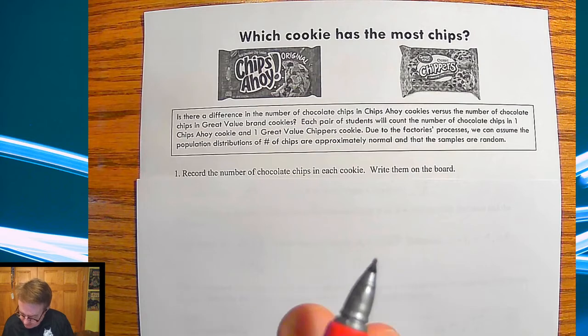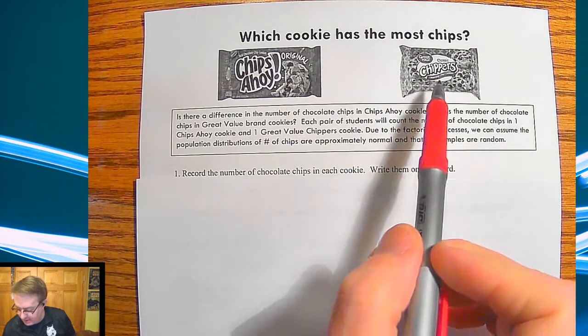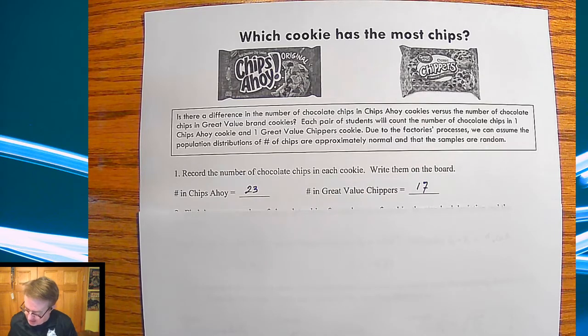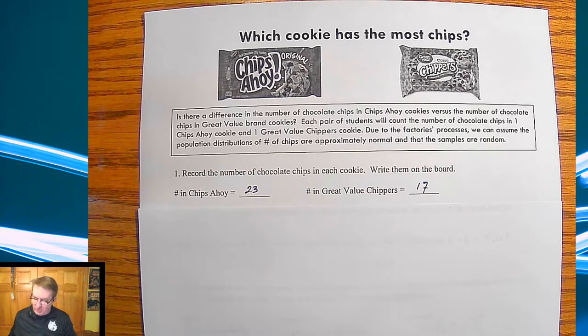So normally what would end up happening is I would bring in both Chips Ahoy and the Great Value Chippers from Walmart, and I'd have the kids go through and get one cookie of each and determine how many chocolate chips are in each cookie. So you're going to record those down here. So last year, this is what I got. I had 23 chips in the Chips Ahoy cookie and 17 in Great Value Chippers. We don't spend a lot of time talking about how best to do it, so obviously it's not like a super real thing. But again, what we're trying to do is use this as a structure.